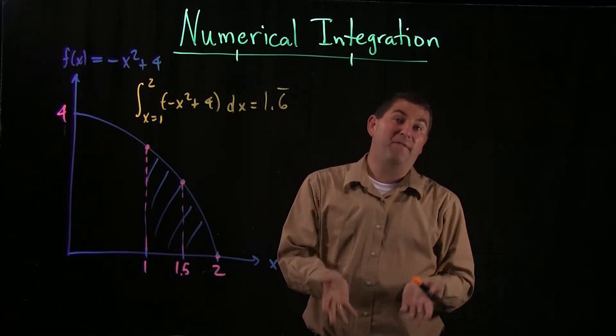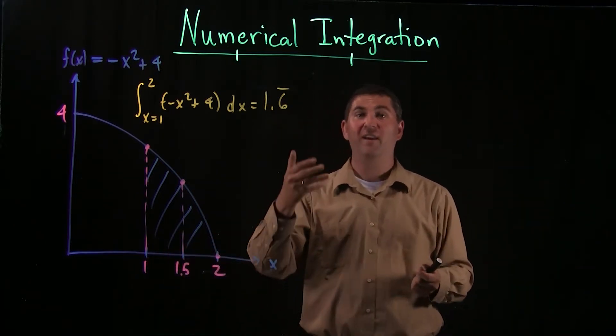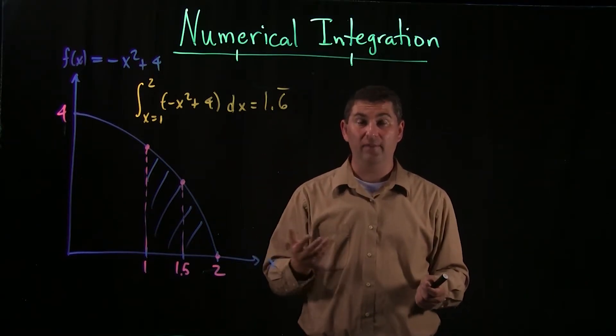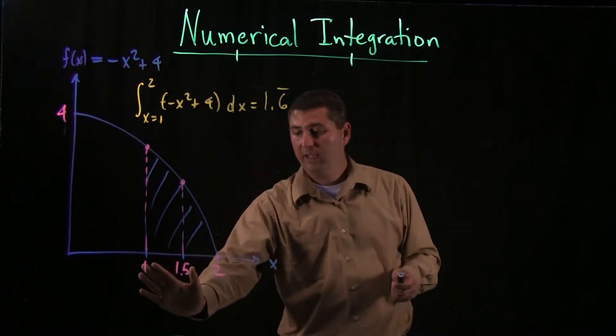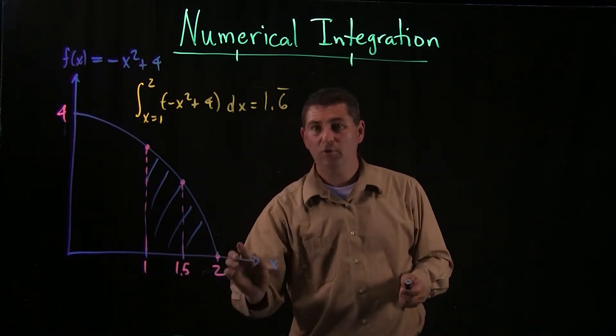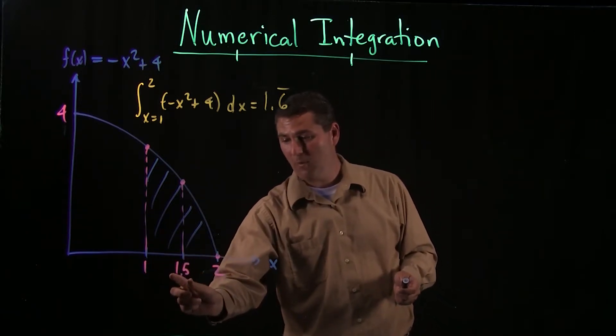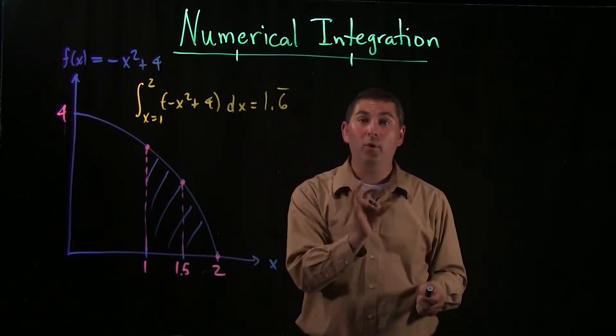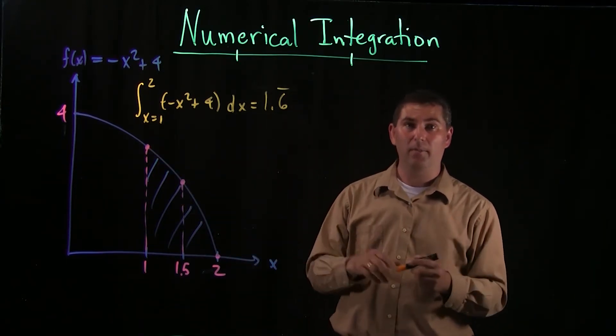Now, it wouldn't be fair to use Simpson's rule with more partitions than I used for the midpoint rule or the trapezoidal rule or in any of the other rules. So I'm going to try to be fair here and only use these two different partition intervals. So I'm going to break it up at 1.5 here. So I have this interval and this interval. I'm just going to use one parabola. Let's see how close we can get with our approximation.